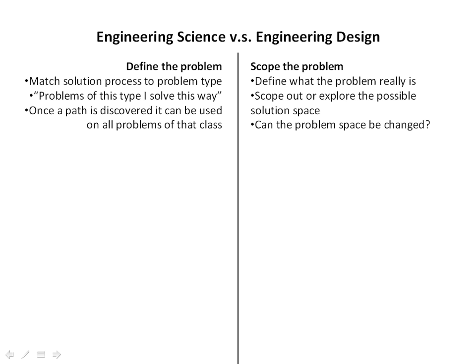In engineering design, on the other hand, rather than defining problems, we tend to scope the problem. We have to figure out what problem we're really solving and explore the possible solution space, because often the solution space extends to areas that don't even seem related when you first start. The problem space can also be changed — by redefining the problem and learning more, you may realize something that didn't seem like a solution may be a very cost-effective and fast solution, if you simply change what the problem is.